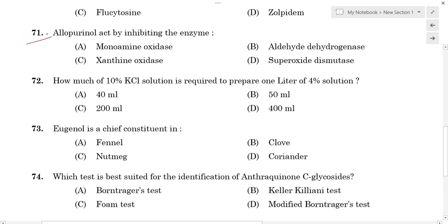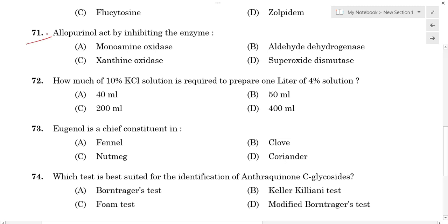First question: Allopurinol acts by inhibiting which enzyme? Option A: monoamine oxidase. Option B: aldehyde dehydrogenase. Option C: xanthine oxidase. Option D: superoxide dismutase.